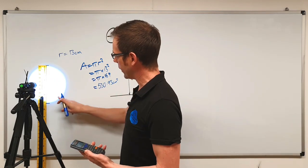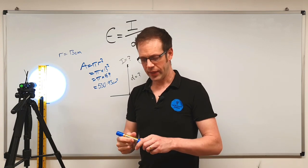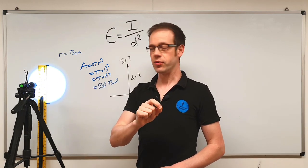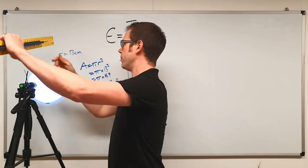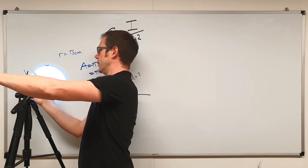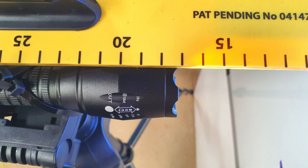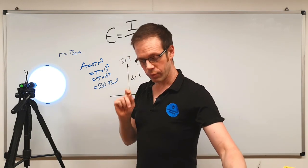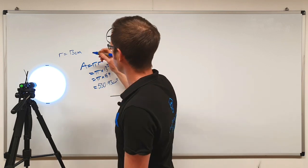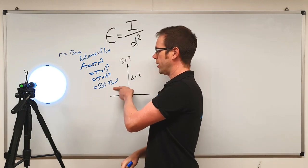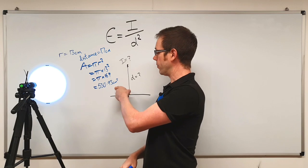Pi times 169 gives us 530.93 centimetres squared — that's the area being illuminated by the torch at the moment. Now, the distance from the surface to the light is really going to define what happens with our light level. Measuring that now, we find the distance from the light source to the surface is 17 centimetres. So when the distance equals 17 centimetres, the area being illuminated is 530.93 centimetres squared.